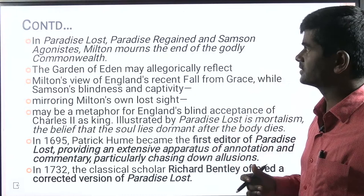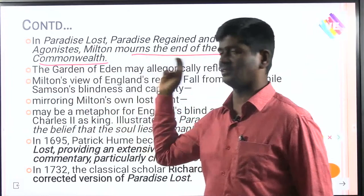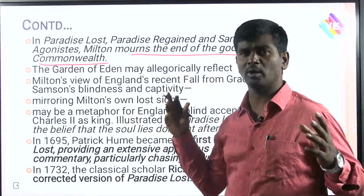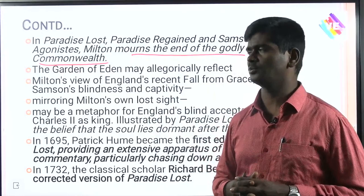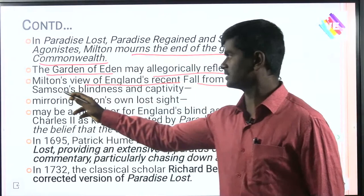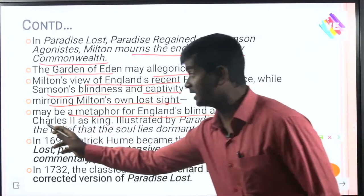In Paradise Lost, Paradise Regained, and Samson Agonistes, the end of the godly Commonwealth is mourned. The Garden of Eden may allegorically reflect Milton's view of England's recent fall from grace. Samson's blindness and captivity mirrors Milton's own lost sight and may be a metaphor for England's blind acceptance of Charles II. In 1695, Patrick Hume became the first editor of Paradise Lost — providing extensive annotation and commentary. In 1732, classical scholar Richard Bentley offered a corrected version of Paradise Lost.